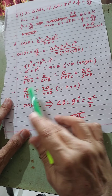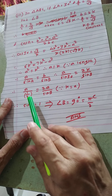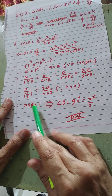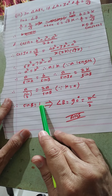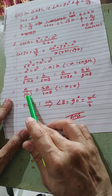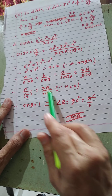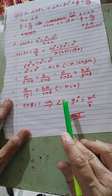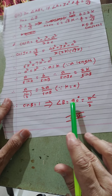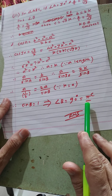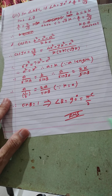With sin B = 1 and the 2s cancelling, angle B = 90° (or π/2 radians). Thank you.